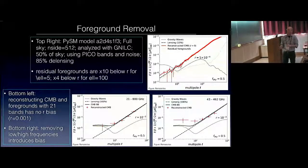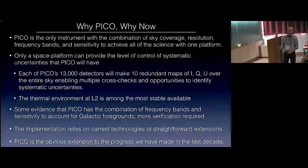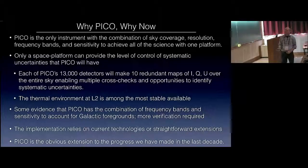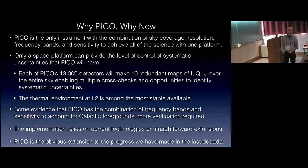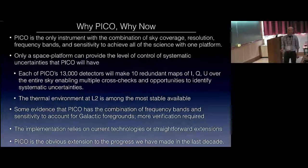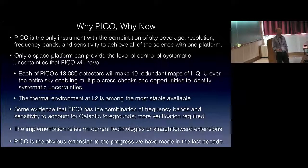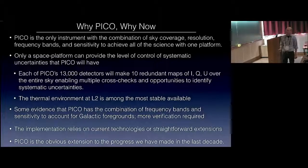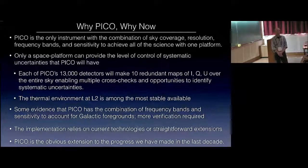I have one more slide on foreground removal. I won't dwell on it. You're encouraged to ask questions. PICO is the only instrument with the combination of sky coverage, resolution, frequency bands and sensitivity to achieve all of the science with one platform. Only a space platform can provide the level of control of systematic uncertainty that PICO will have. We'll have 13,000 detectors making ten redundant maps of IQU over the entire sky making multiple cross checks. We have some evidence that PICO has the combination of frequency bands and sensitivity to account for galactic foregrounds. There's no doubt that more verification of that capability is needed. The implementation relies on current technologies, straightforward extension. And this is what we will recommend to the Decadal panel. PICO is the obvious extension to the progress we have already made in the last decade to be implemented in the next decade.